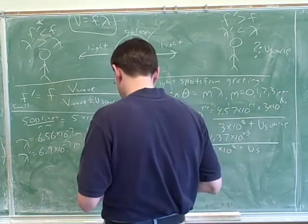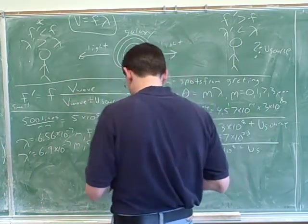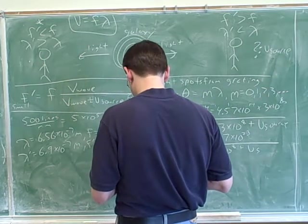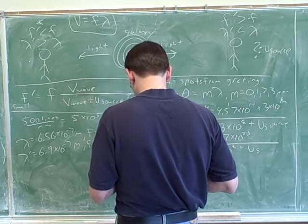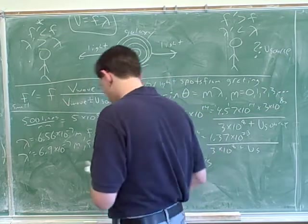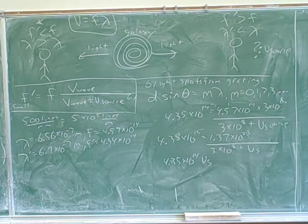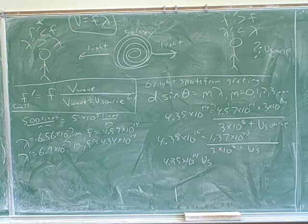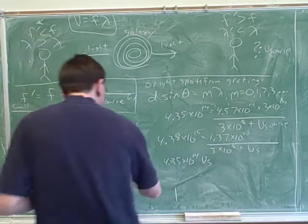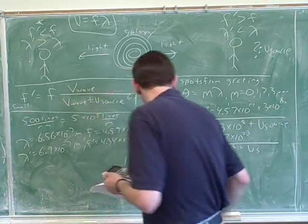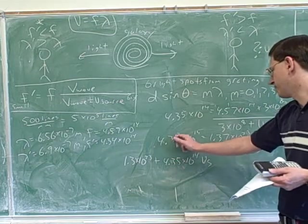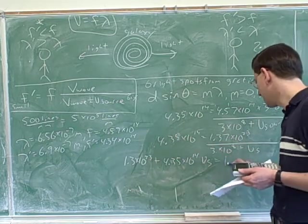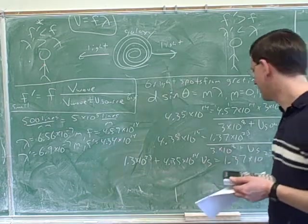I thought v-source is negative, though. That's not a good sign. Well, let me catch up with you. So 1.3 times 10 to the 23rd — that's what you get when you multiply 4.35 times 10 to the 14th times 3 times 10 to the 8th. And then you also multiply 4.35 times 10 to the 14th times v-source. Okay, and now we have to continue.